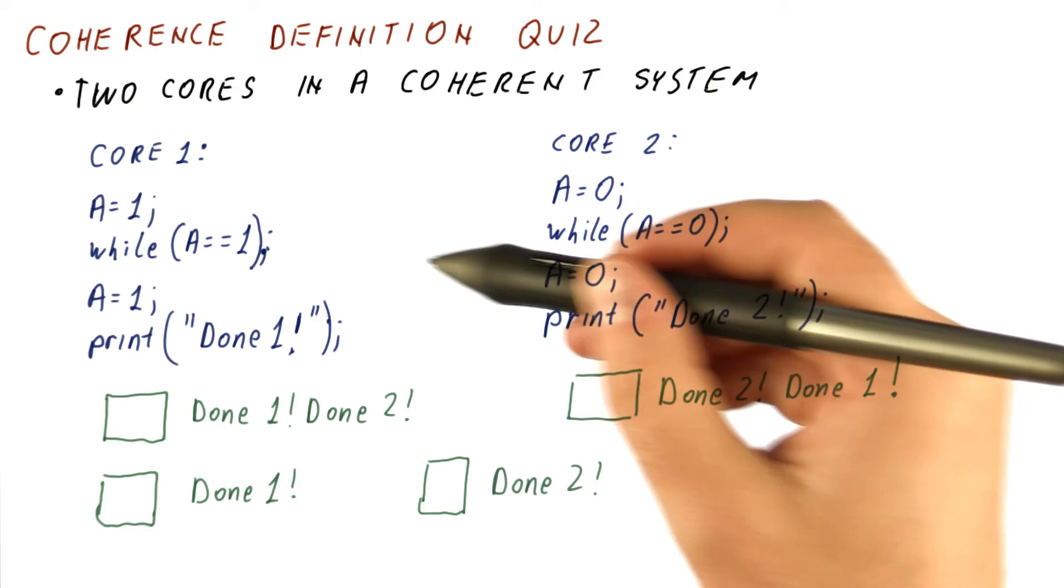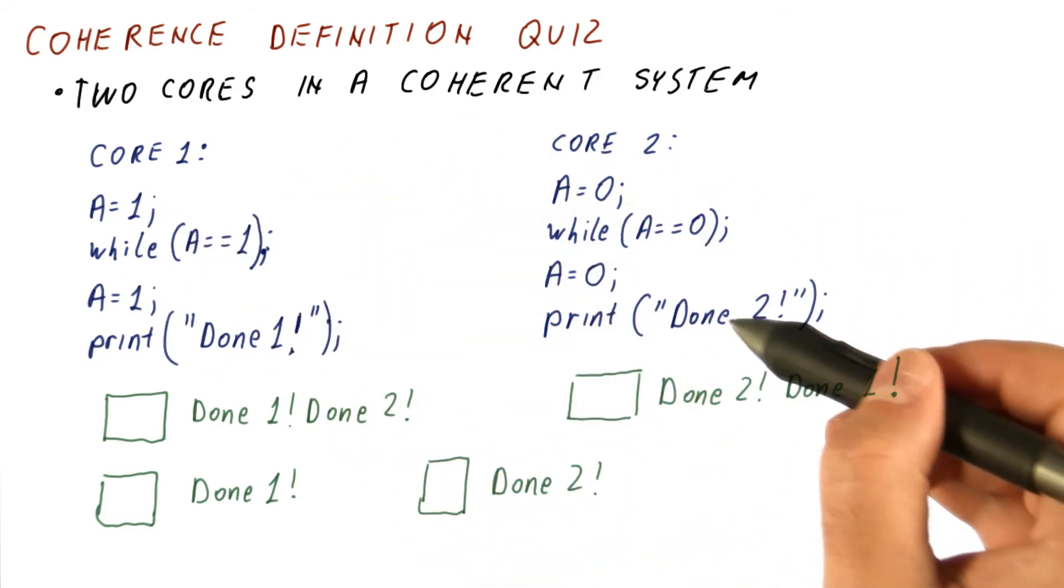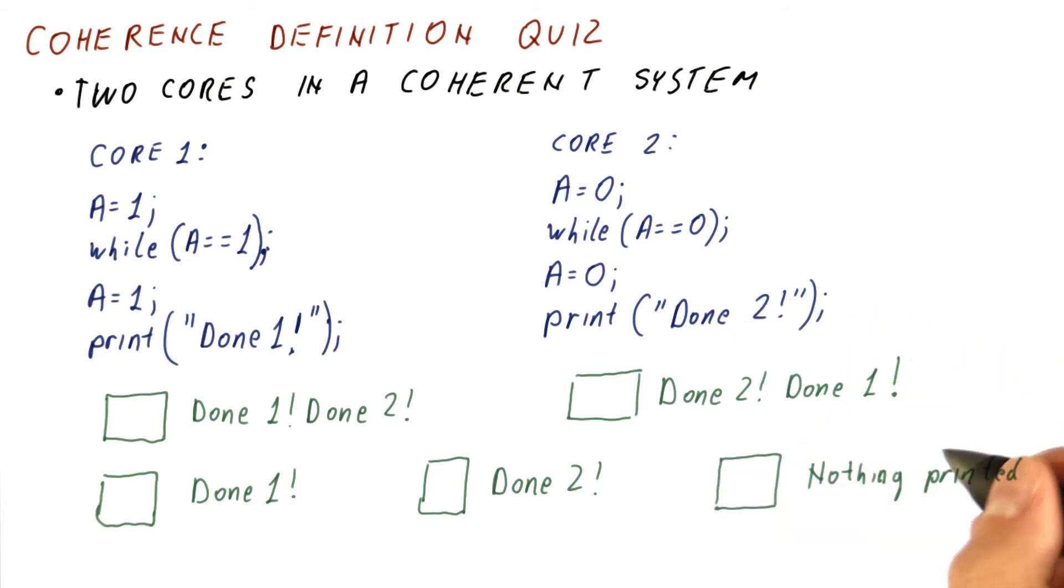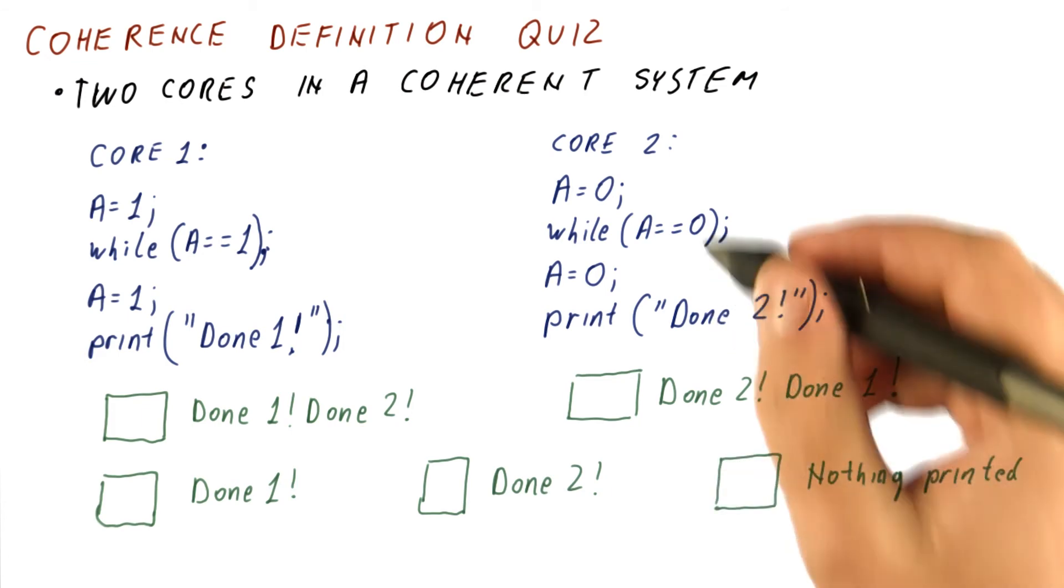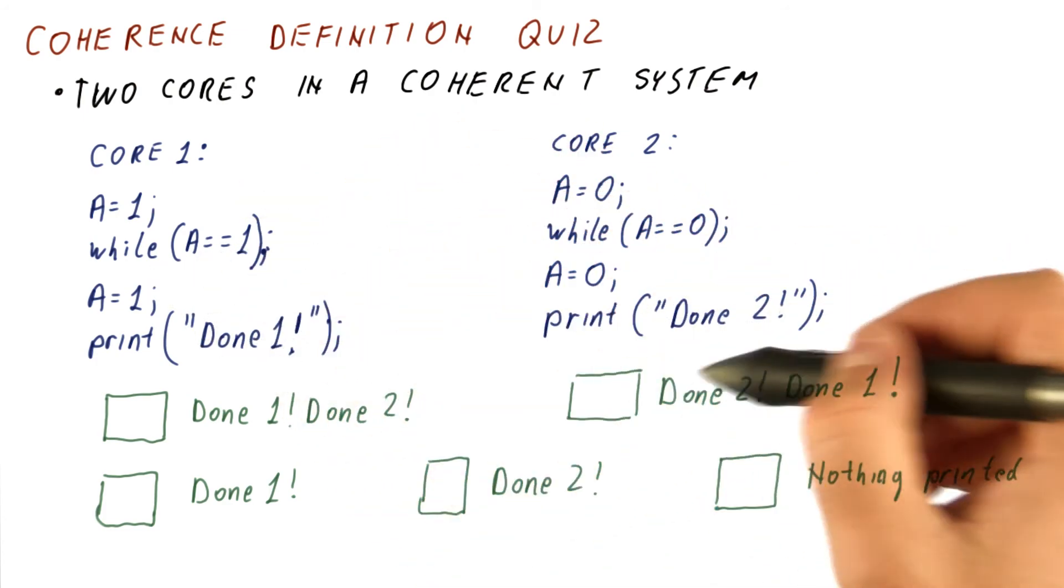The next option is core one gets stuck and never gets to print done one, but core two successfully prints done two. And the final option is that nothing is printed because both of the cores get stuck, so neither of them prints anything ever.